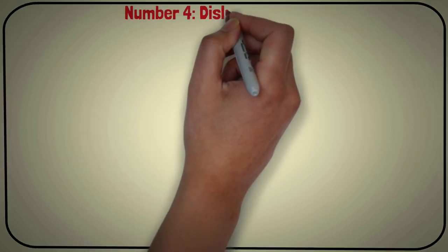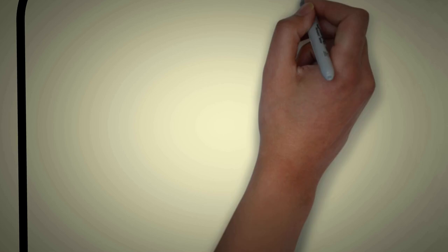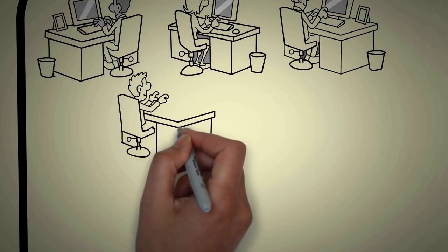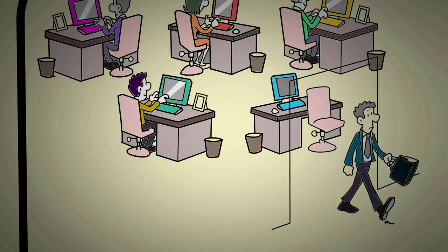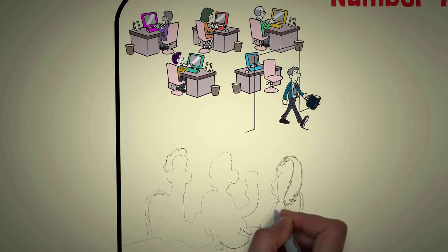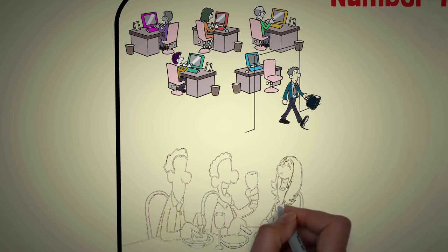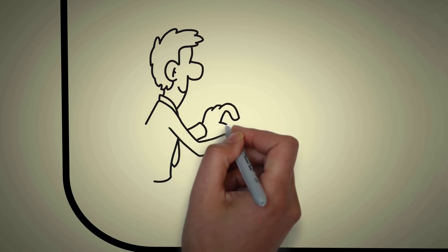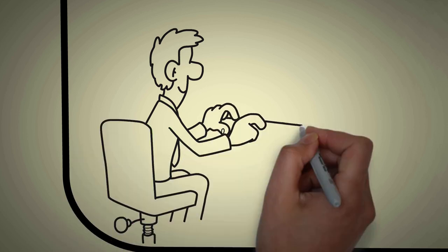Number 4: Dislike of Crowds. Sigma males are known to be private and reclusive individuals who keep to themselves and avoid large crowds. This is due to their dislike of crowds, which can often be overwhelming and distracting. Sigma males are often content doing their own thing and don't feel the need to be around others.